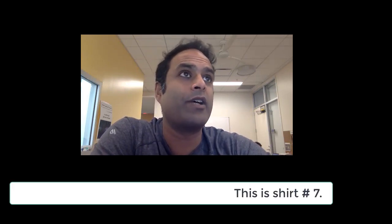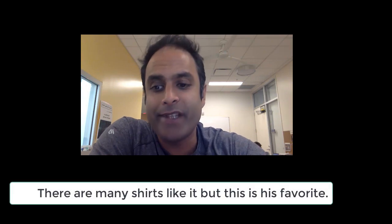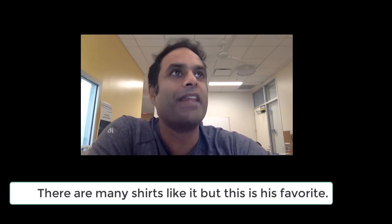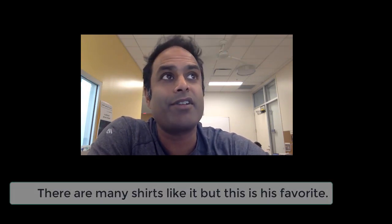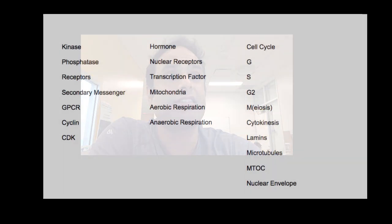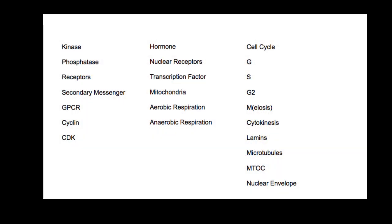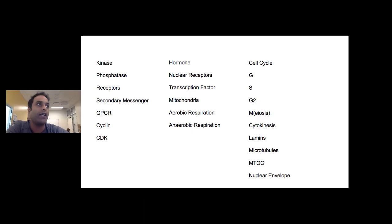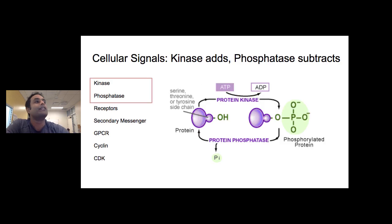Let's go ahead and pronounce them — it's important: kinase, phosphatase, receptor, secondary messenger, GPCR, cyclin, CDK, hormone, nuclear receptors, transcription factors, mitochondria, aerobic respiration, anaerobic respiration, cell cycle, G1, S, G2, mitosis, cytokinesis, lamins, microtubules, MTOC, and nuclear envelope.